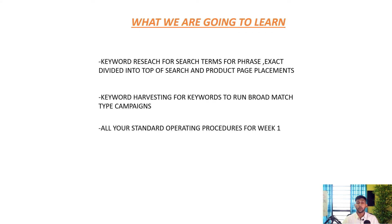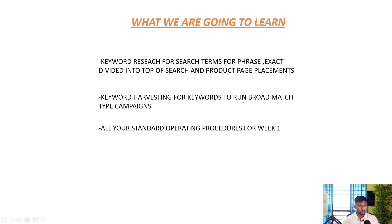First, what we are going to do is go to Brand Analytics to do the research for phrase and exact campaigns. So we are going to find the search terms to run phrase and exact match campaigns. Then we are going to do a reverse ASIN search to get keywords that we are going to run as broad match campaigns.